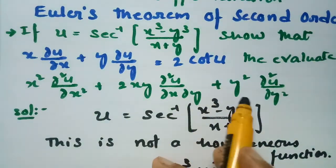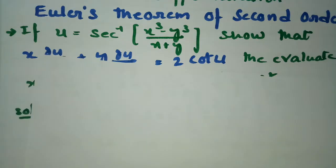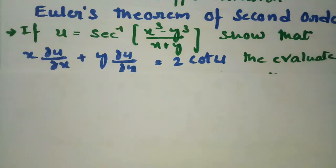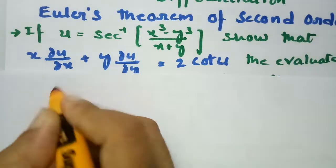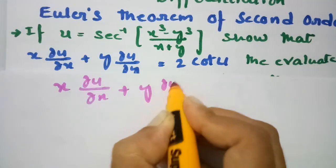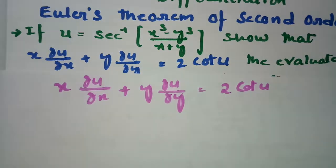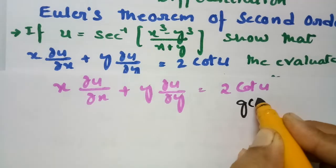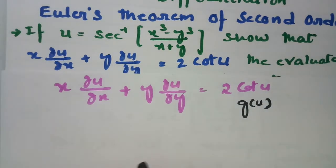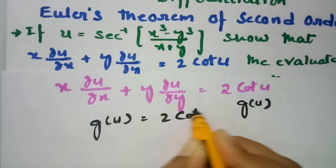Next, we have to evaluate Euler's theorem of second order. As we got x into ∂u/∂x plus y into ∂u/∂y equals 2 cot u, we construct this as g(u). So g(u) is nothing but 2 cot u.